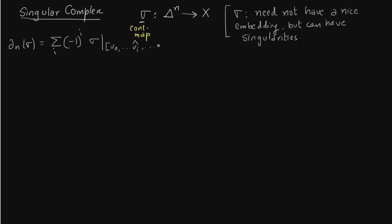So why is it called singular? This is because the continuous map sigma may not have a nice embedding — it can have singularities.